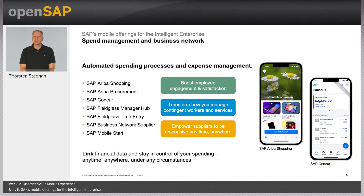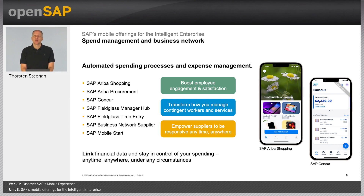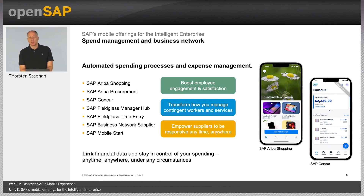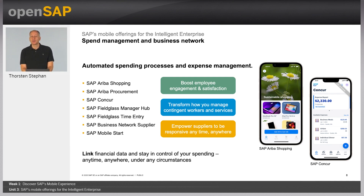Let's take a look into Spend Management and Business Network. With the SAP Ariba Shopping mobile app, you have a personalized, intuitive, and sustainable shopping experience anywhere and anytime. The application connects you to SAP Ariba and lets casual employees shop easily from their mobile devices. Further in that area, the SAP Concur mobile application — if you use Concur travel, expense, or invoice at work, you can easily use the Concur mobile app to manage your travel and expenses on the go. Review and approve expense reports, invoices, and travel requests. Snap a photo of your receipt and instantly add it to your expense report. Book a flight or rail ticket, reserve hotel rooms or cars, and many more.